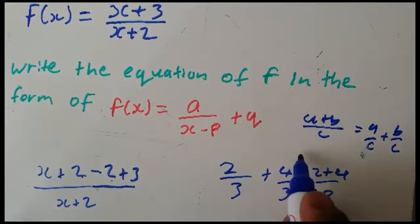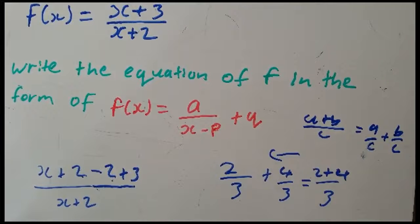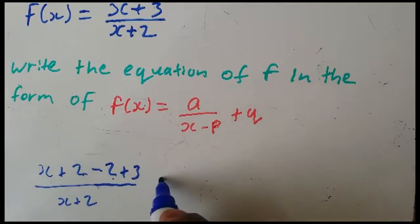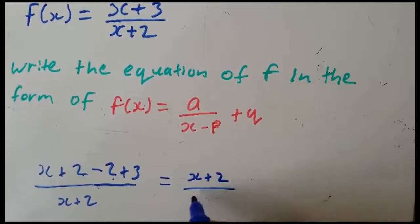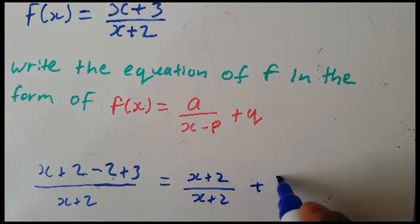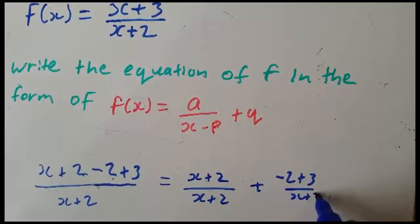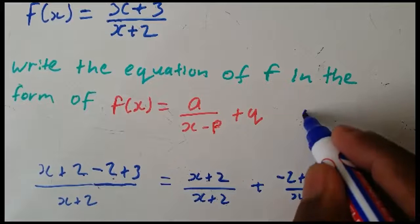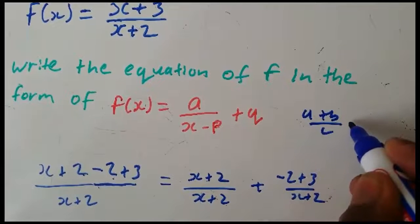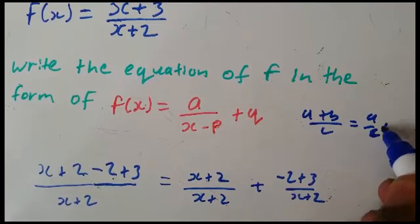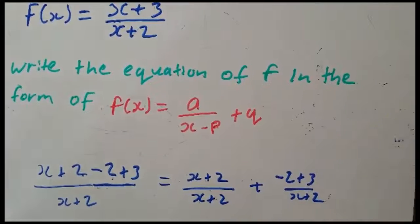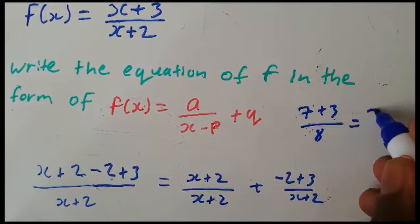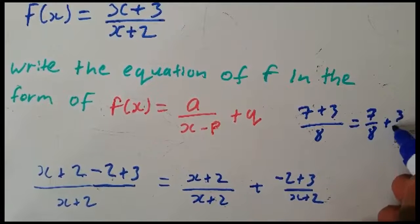So that's exactly what I'm going to do here. We're going to split: (x + 2)/(x + 2) + (−2 + 3)/(x + 2). Notice these were sharing the same denominator — I just separated them. Remember, whenever we have (a + b)/c, we are allowed to change it into a/c + b/c. For example, (7 + 3)/8 becomes 7/8 + 3/8.